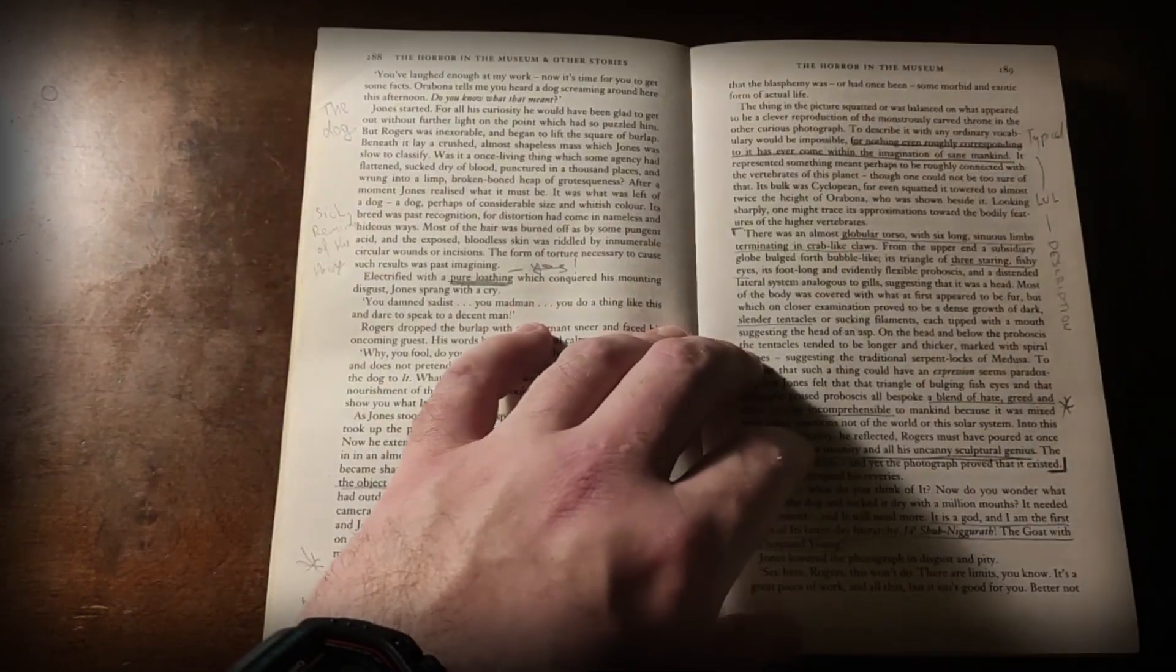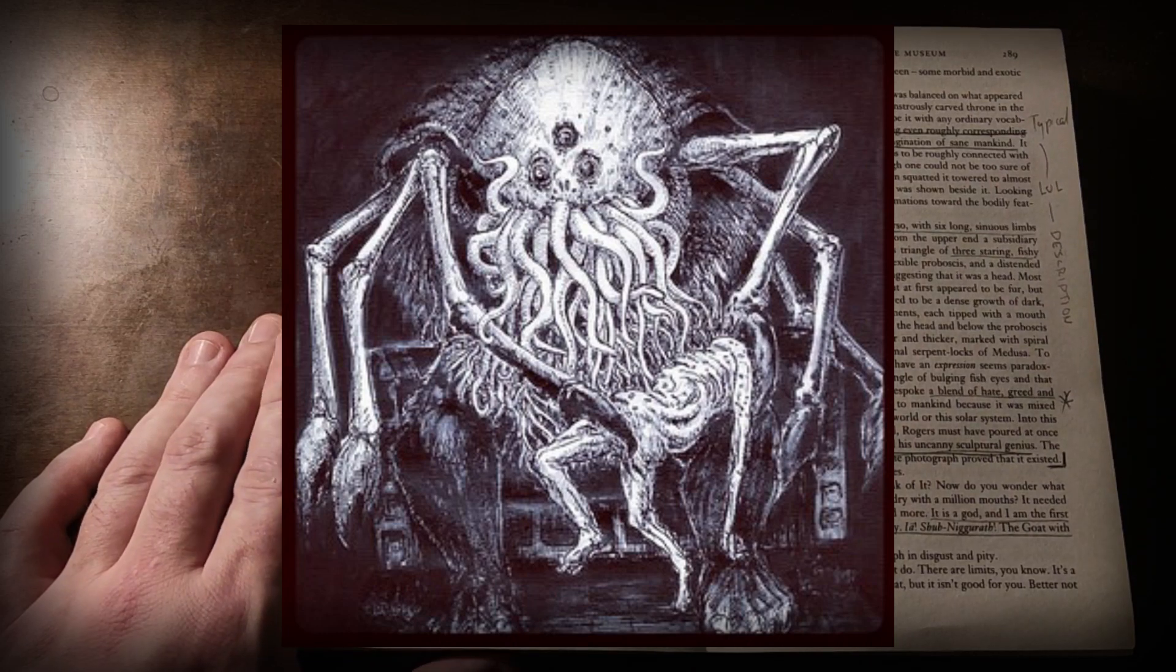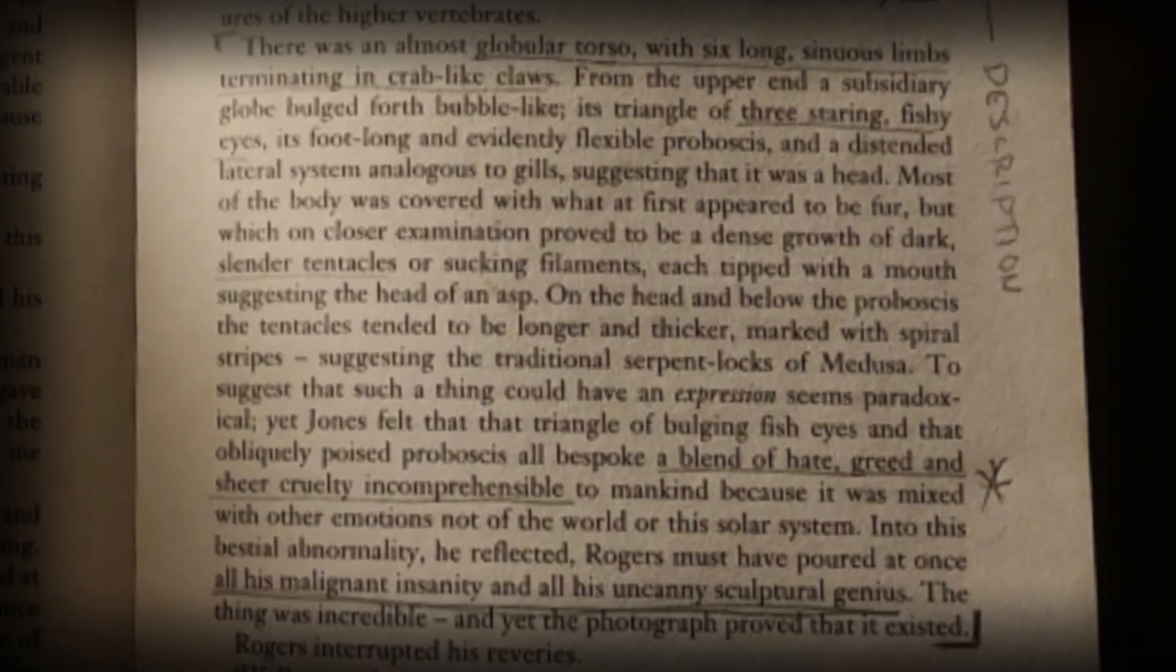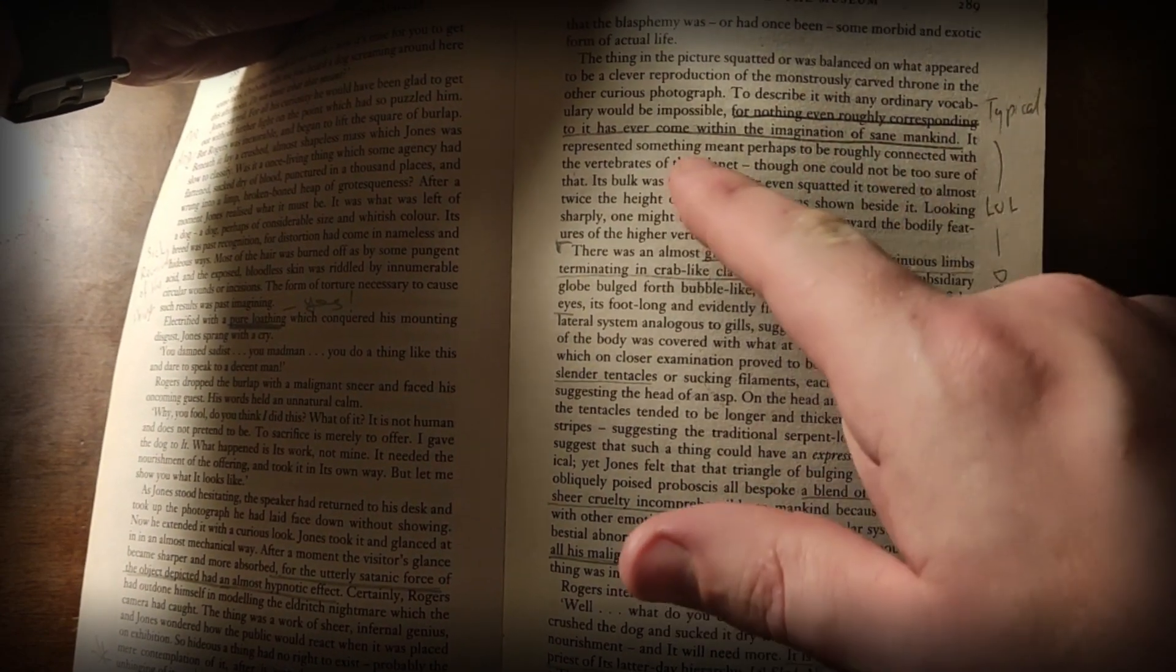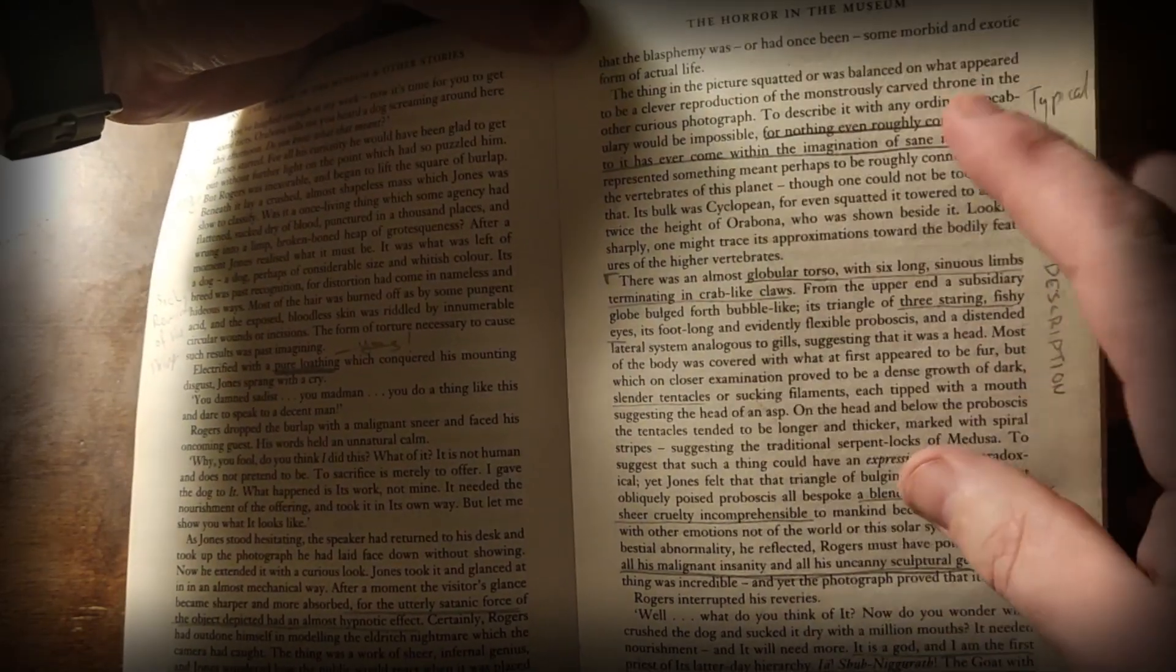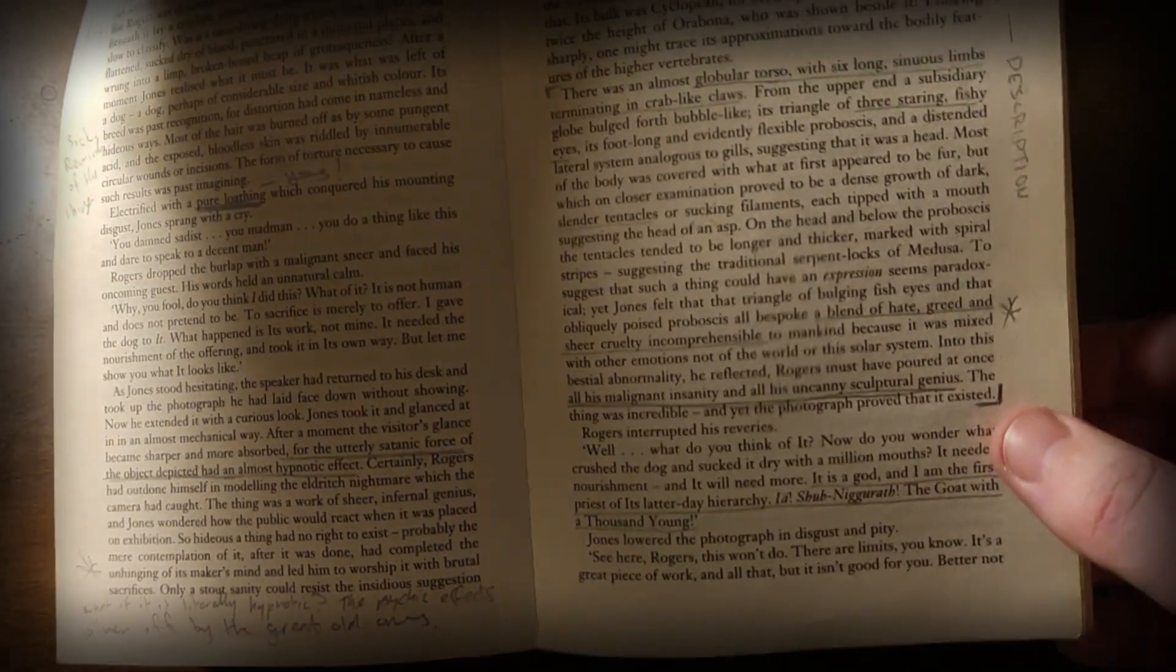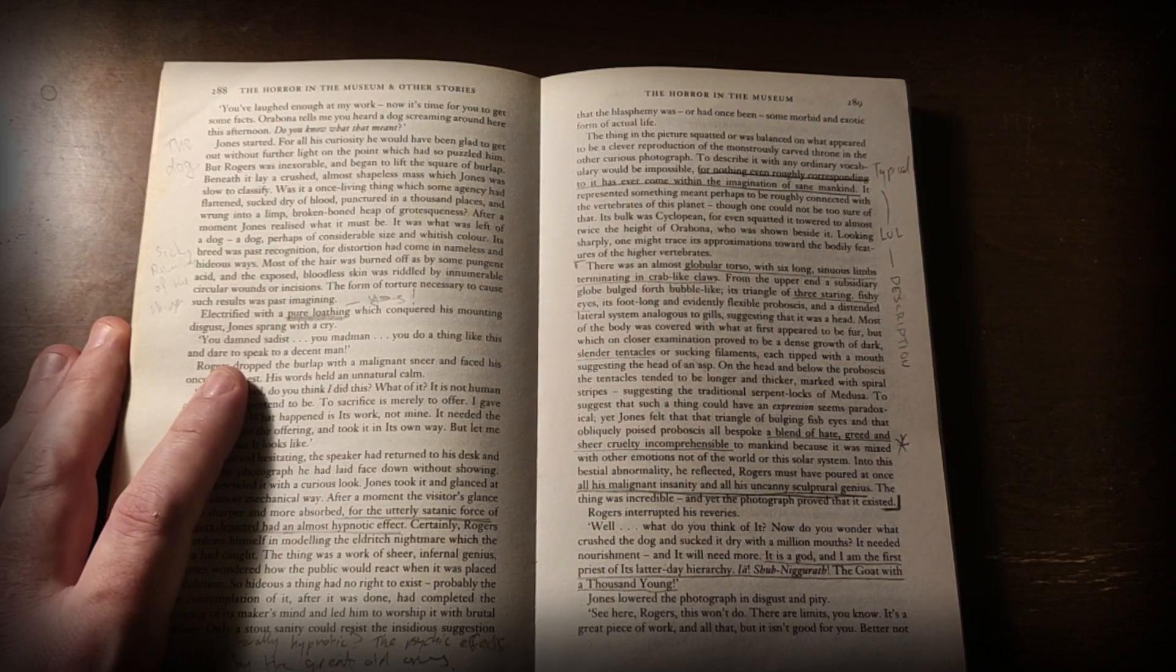The museum here is described very morbidly - these dark areas of the museum shut off to the public. But Rhan-Tegoth, let's discuss this character. I'll put a picture up of what it's supposed to look like - you can pause the screen and have a look. I thought it's funny that Lovecraft says 'for nothing even roughly corresponding to it has ever come into the imagination of sane mankind' and that describing it with ordinary vocabulary would be impossible - and he goes on to describe it in ordinary vocabulary. I love Lovecraft; he sometimes gets criticized.